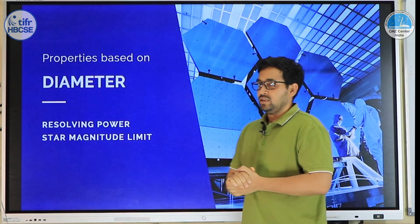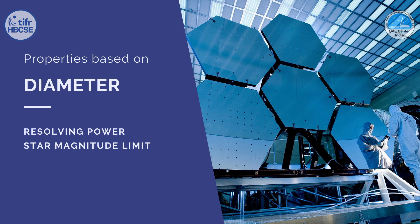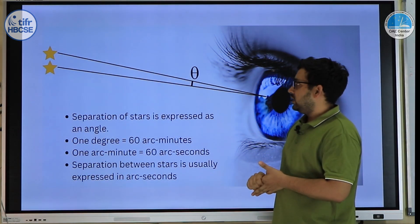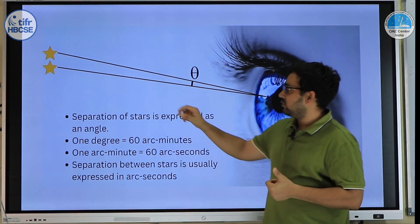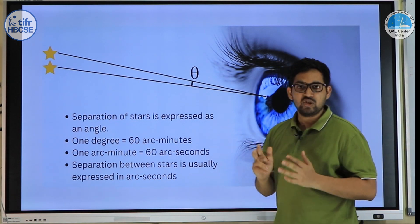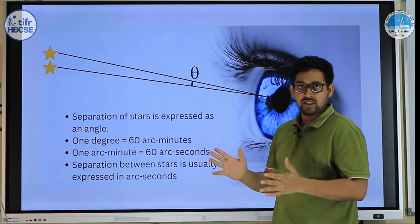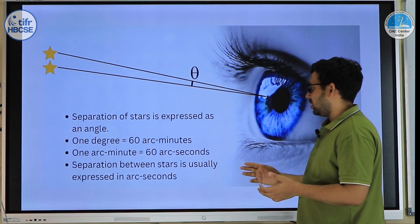These are diameter-dependent properties of a telescope, and they govern two things: resolving power, and the limiting magnitude of stars it can see. An eye can typically resolve stars with an angular separation of roughly one arc minute. If two point objects are closer than one arc minute, the eye won't be able to resolve them as two distinct stars. Just for clarification, one degree consists of 60 arc minutes, and one arc minute consists of 60 arc seconds. We generally measure angular separation in arc seconds or arc minutes.